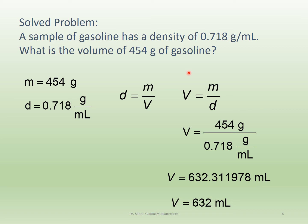Our significant figures should be three, since both given numbers have three sig figs. The fourth digit is less than 5, so drop everything after — the volume is 632 mL. This means the gasoline, with a mass of 454 grams, has a volume of 632 milliliters because its density is 0.718 g/mL.